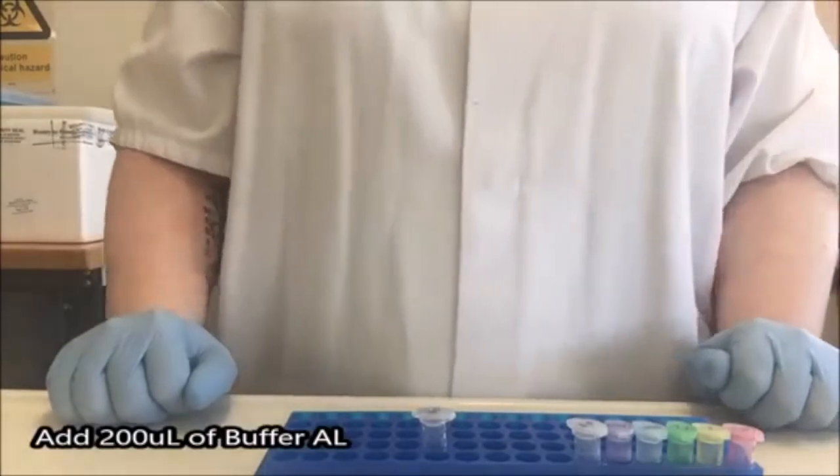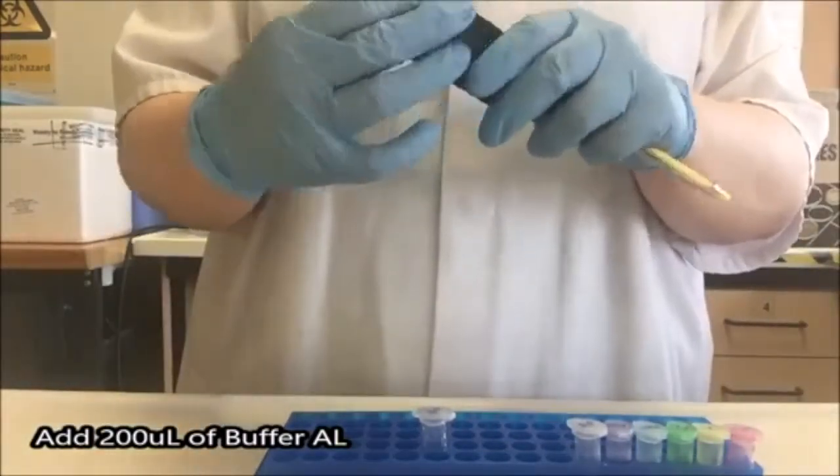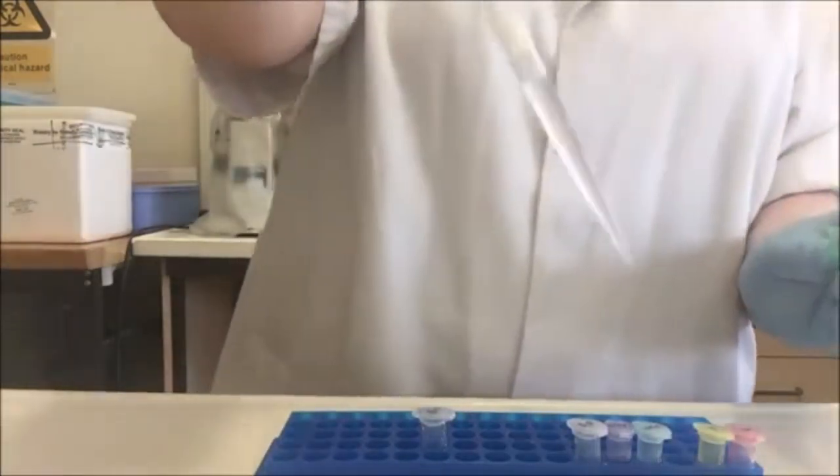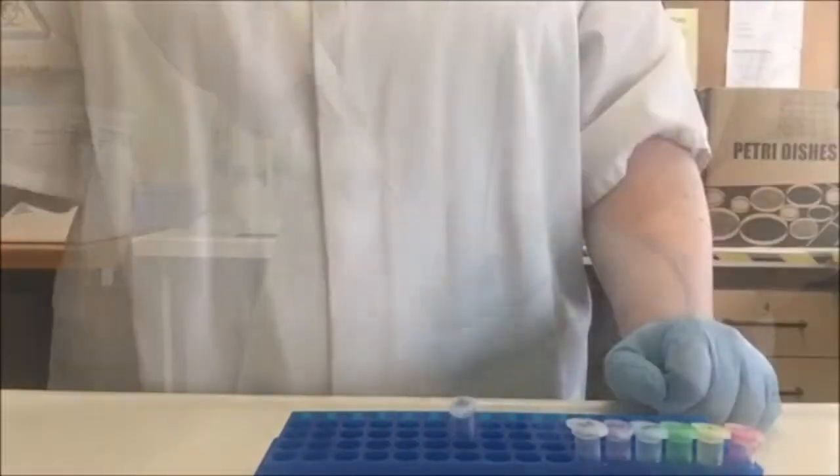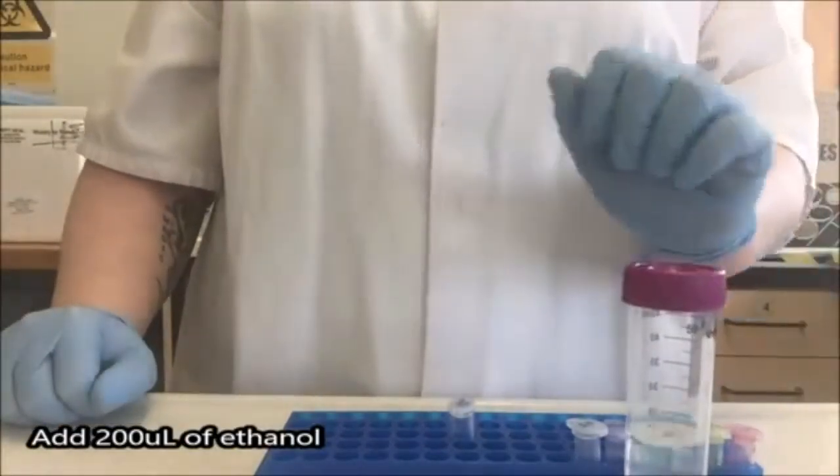My next step is to add buffer AL. We want 200 microliters of that so I'm going to set my pipette to 200. You can see no bubbles, the liquid is not touching the filter. I'm going to add 200 microliters of ethanol, which I have in this slightly larger tube.